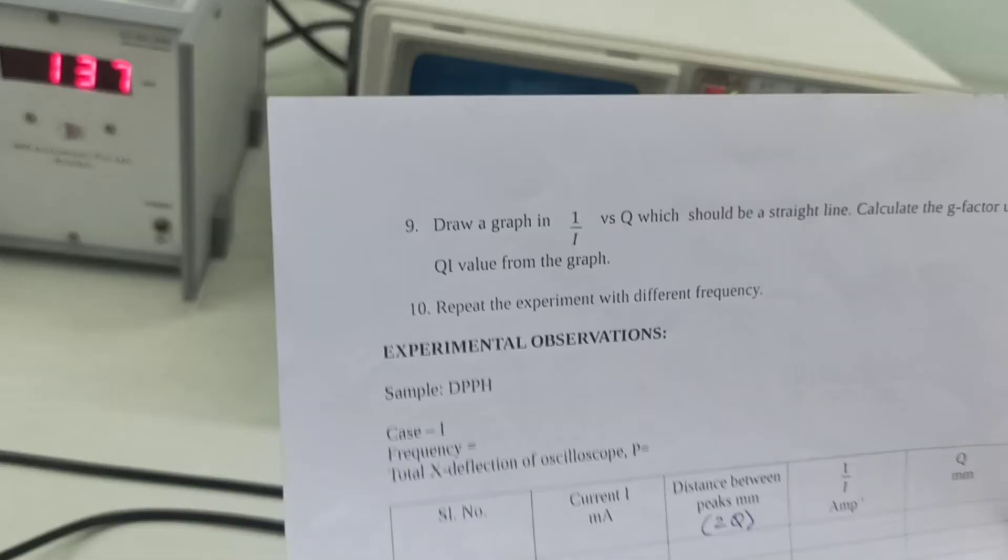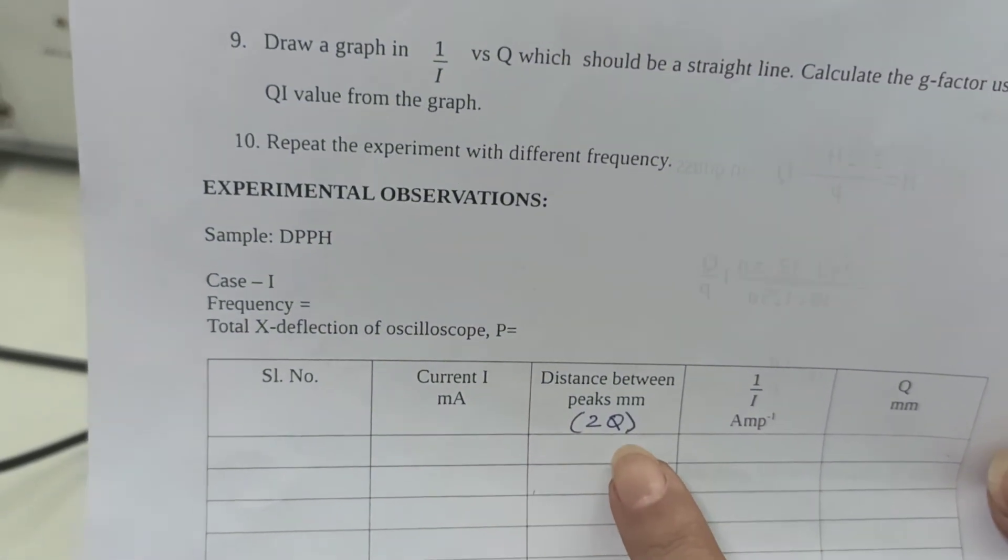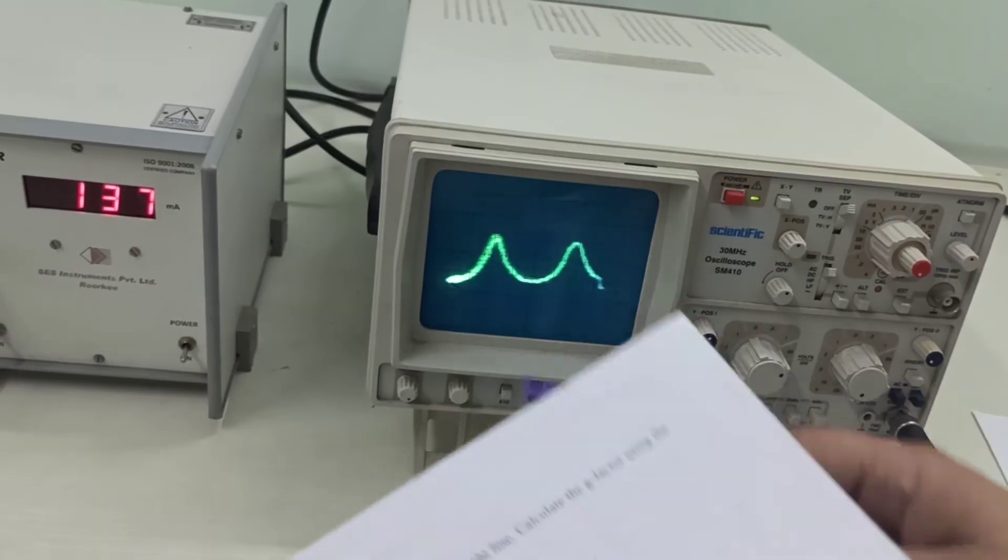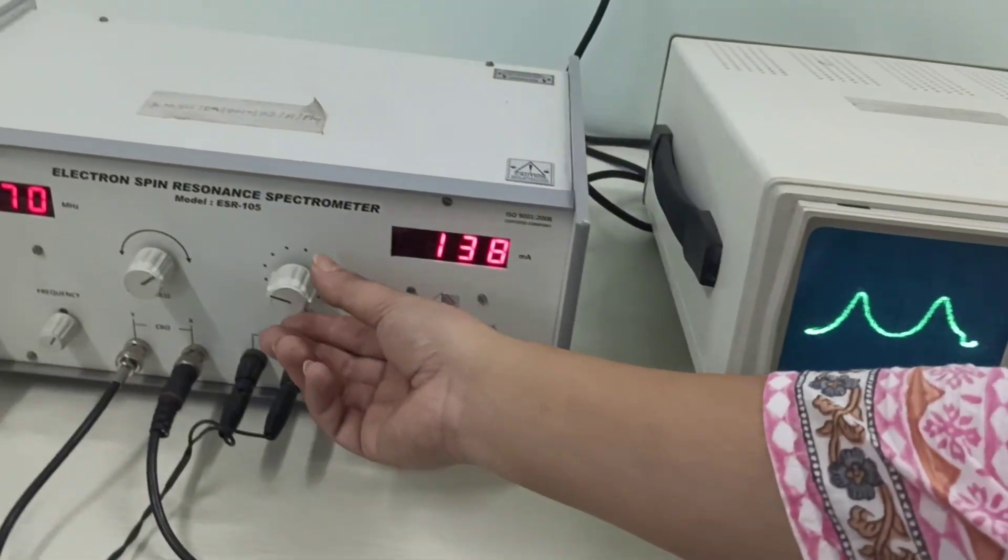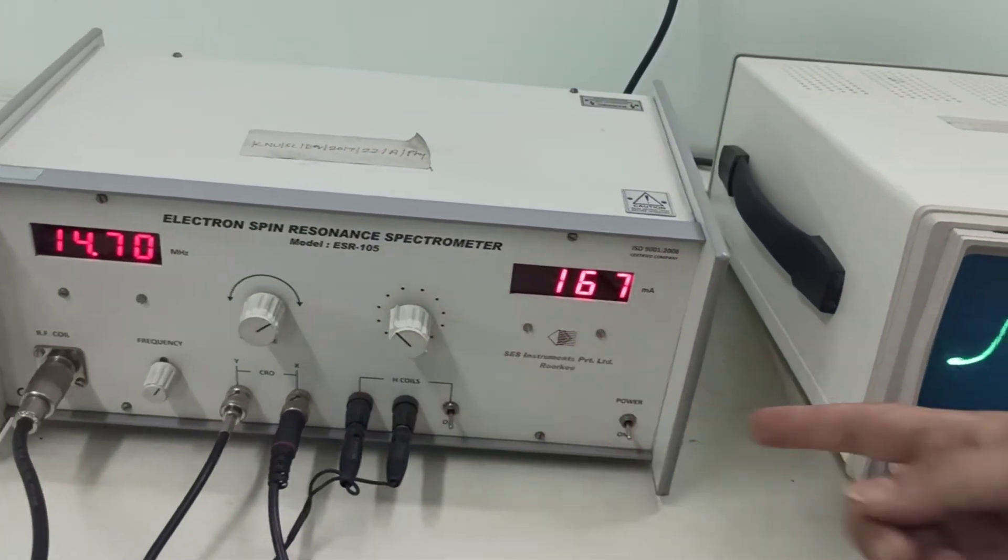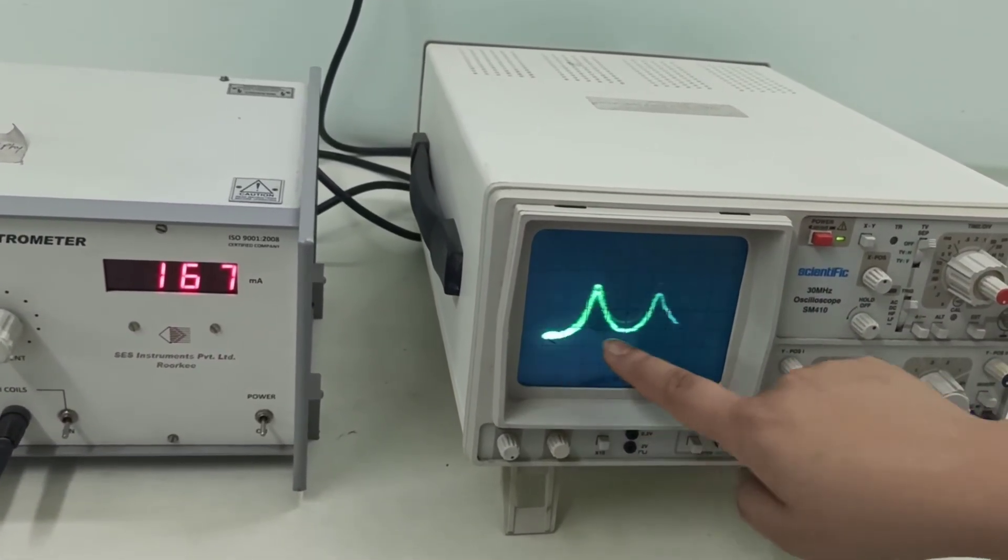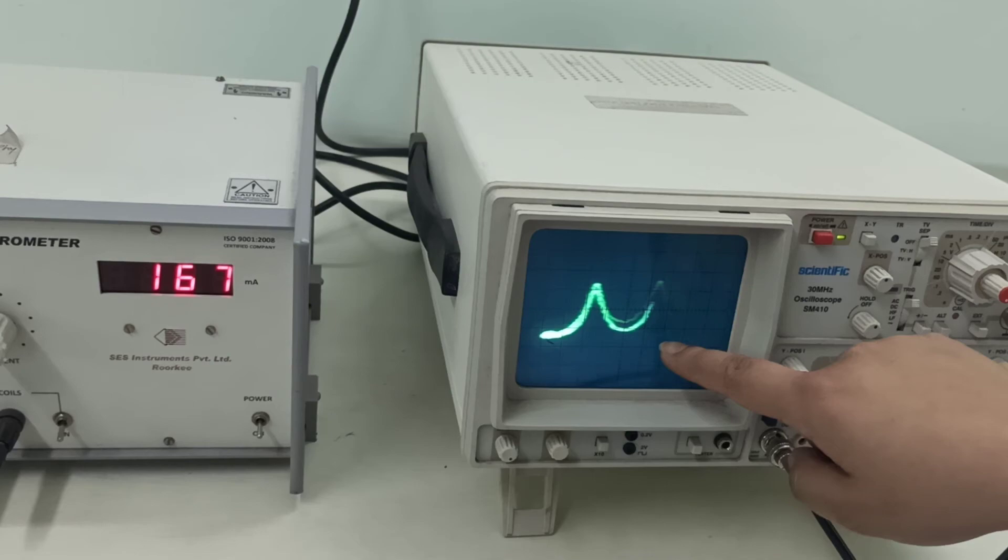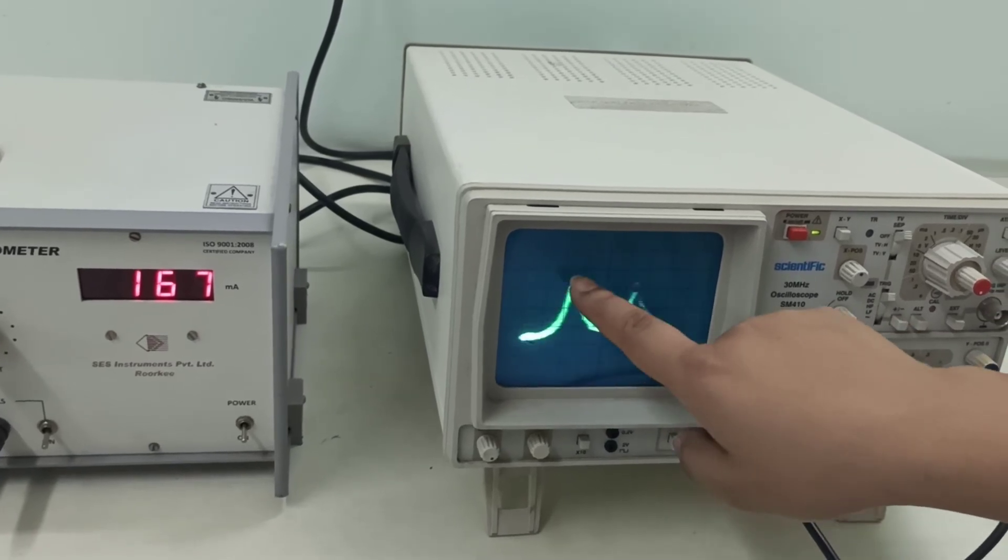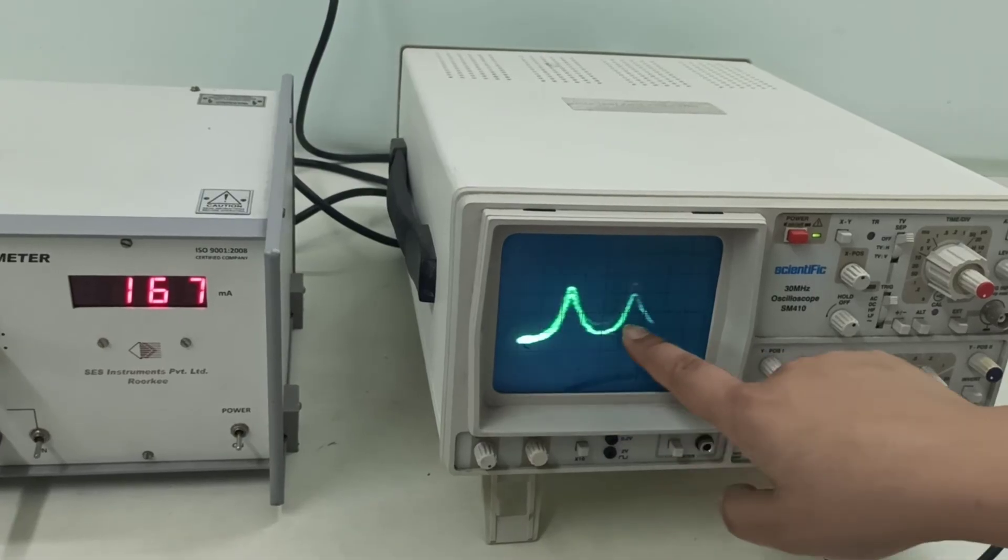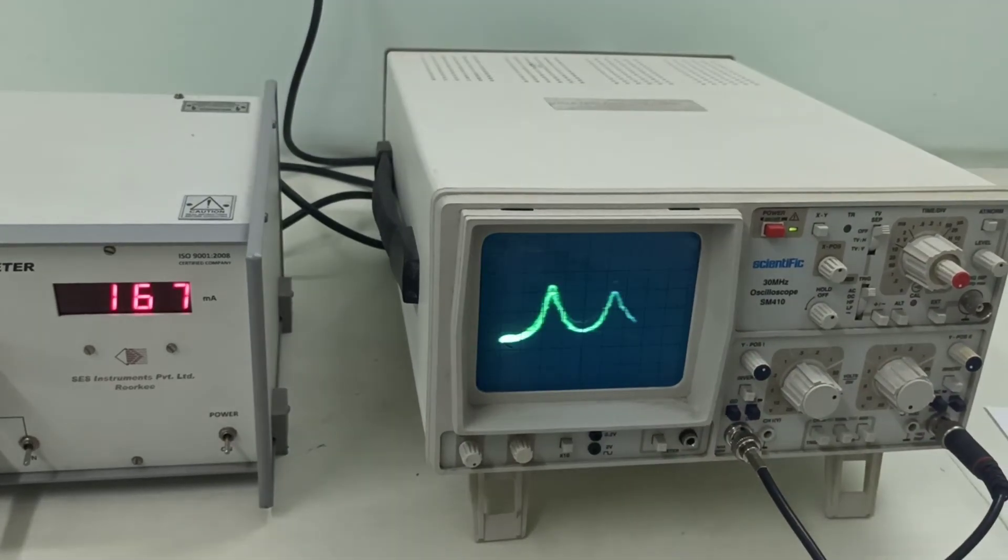And then you have your distance between two peaks, which is 2q. This peak-to-peak distance is 2q. Now, when you change the current, again, the peak-to-peak distance is going to change. P will remain the same, but 2q is going to change. The peak-to-peak distance will change, but your x deflection is not going to change.